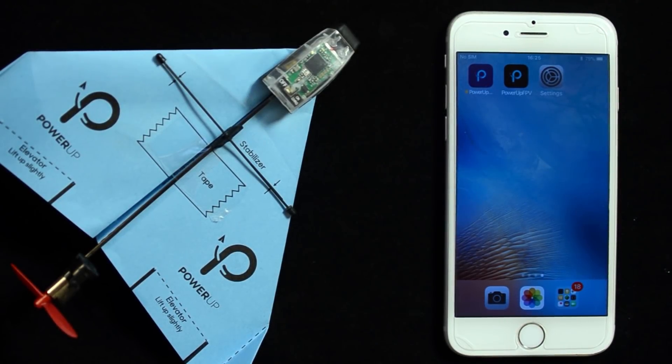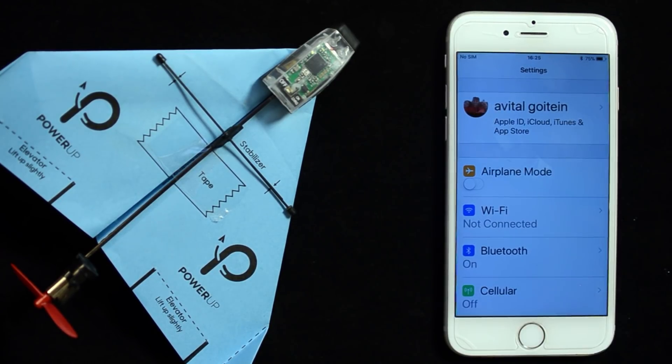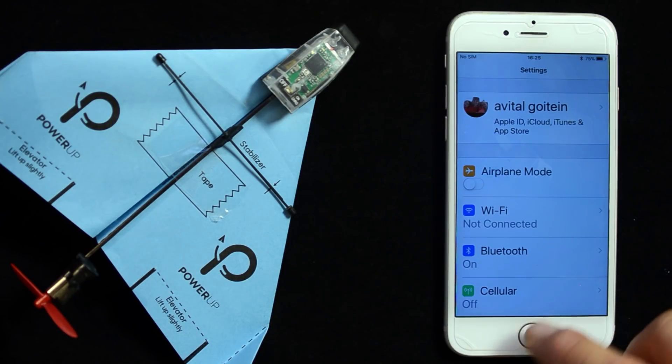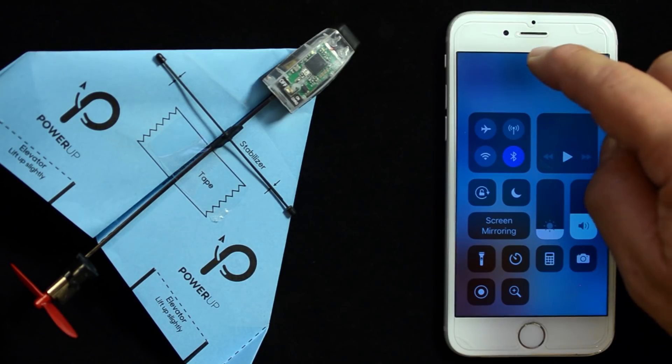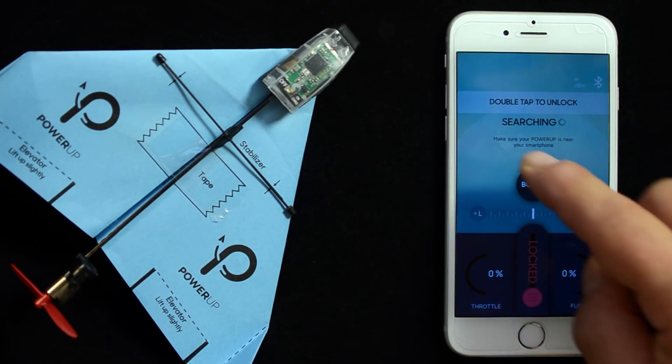Download the free PowerUp app from the App Store. Go to settings, turn off Wi-Fi, and turn on Bluetooth in the control center. Verify that Bluetooth is on, then open your app. You'll notice it's